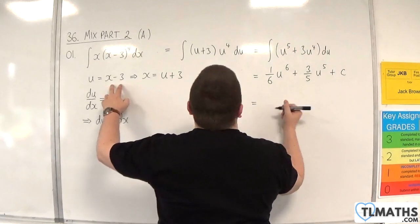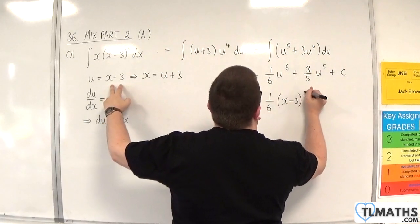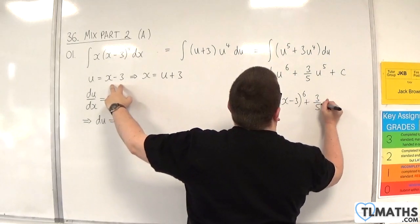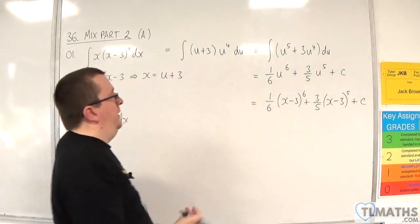And then pop your substitution back in, so 1/6 (x-3)^6 plus 3/5 (x-3)^5 plus your constant c.